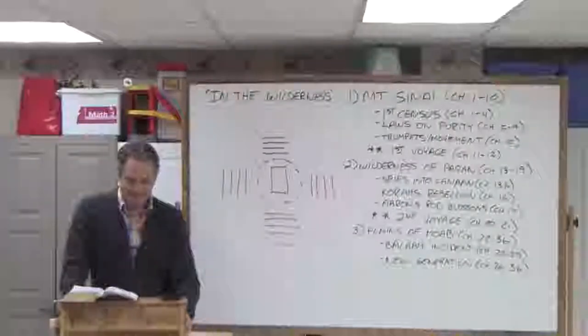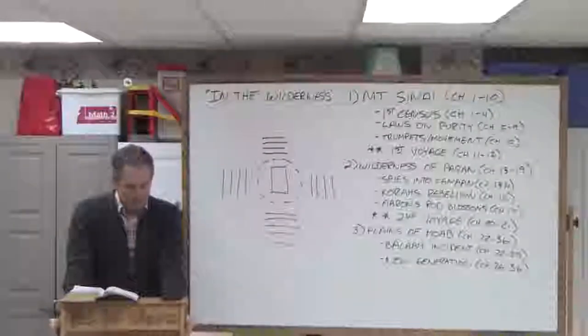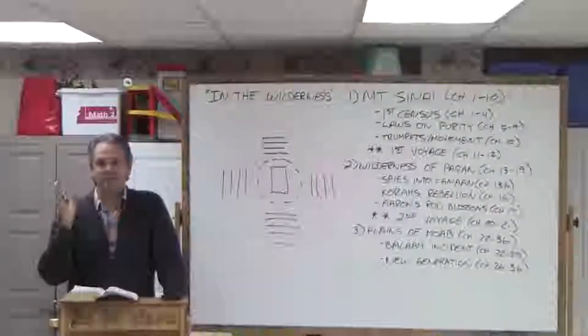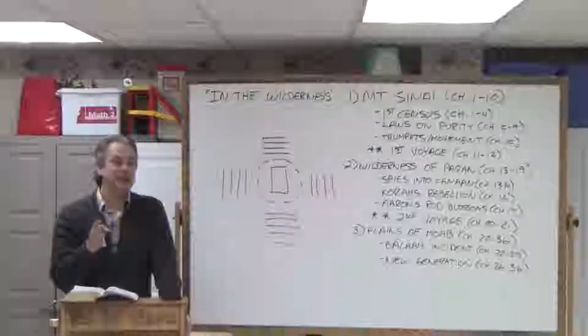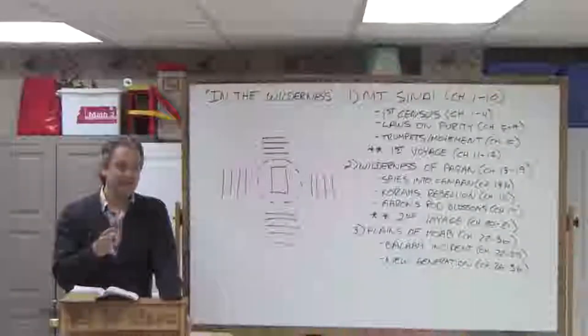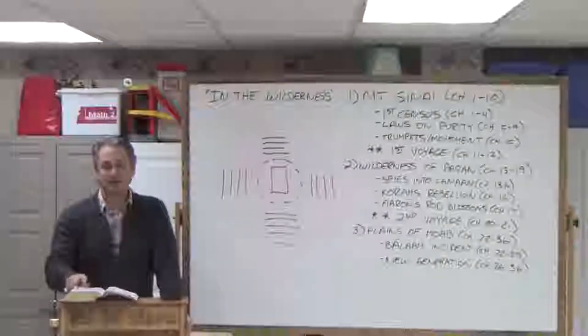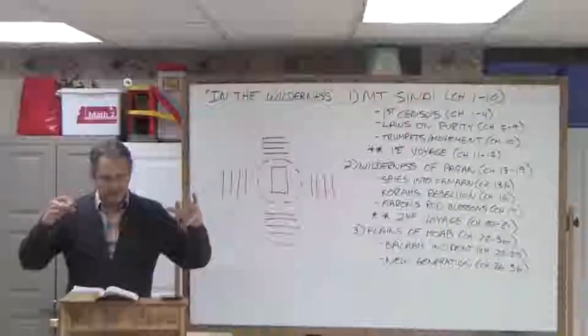God's answer in chapter 11 is, is my arm so short? I'll give these people meat until it comes out their nose. And that's literal. He sends quail, but he's upset with the people wanting to go back to Egypt because one rule he gives them is you can never go back to Egypt. So he sends them quail until it's coming out their nose, but he also sends a plague to punish them.